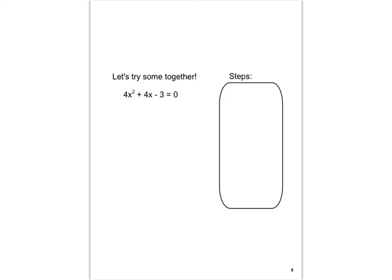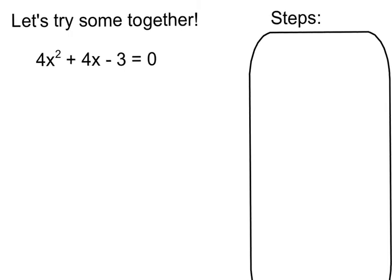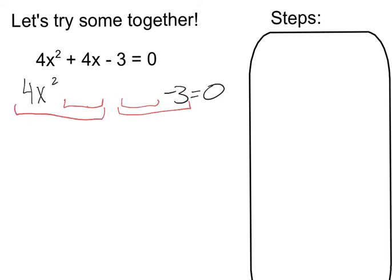Moving on, we need ways to factor more complicated stuff. I'm going to write down some steps that will be consistent for all of these. We're going to break this up into two groups of two instead of one group of three, because two groups of two we're going to be able to factor. The trick is deciding what those groups are going to be — that's the hard part. We're going to talk about this in terms of a, b, and c: a is the number in front of x squared, b is the coefficient in front of x, and c is the constant.